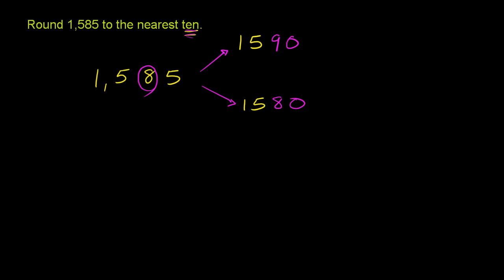Now we've seen in the last few examples, if the place to the right of it is 5 or greater, we round up. Well, the place to the right of it is definitely 5 or greater. It is 5, so we round up to 1,590. And we're done.